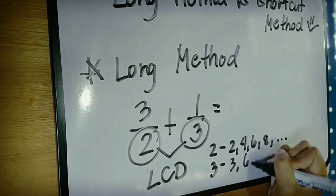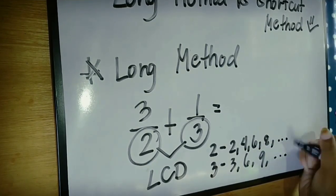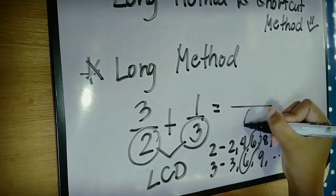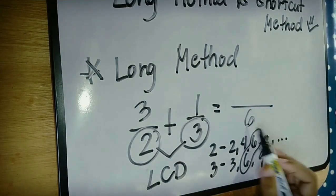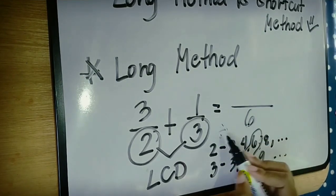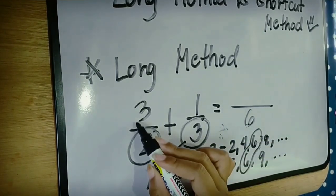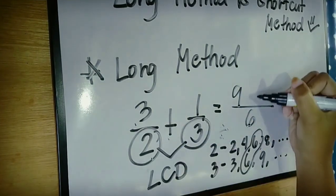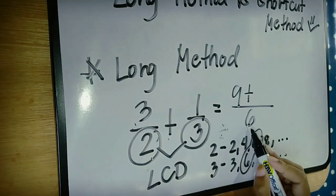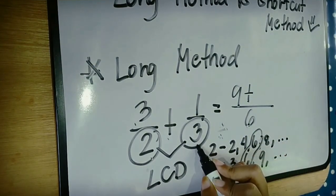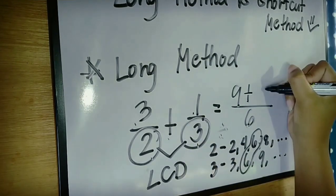The factors of 2 are 2, 4, 6, 8 and the factors of 3 are 3, 6, 9 and so on. The LCD or least common denominator is 6. Then 6 divided by 2, the answer is 3 times 3, the answer is 9. Then copy the plus sign and 6 divided by 3, the answer is 2 times 1, the answer is 2.